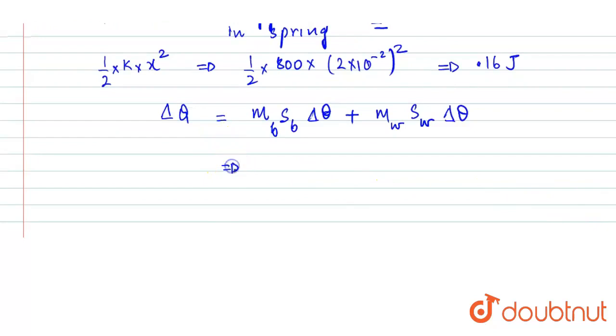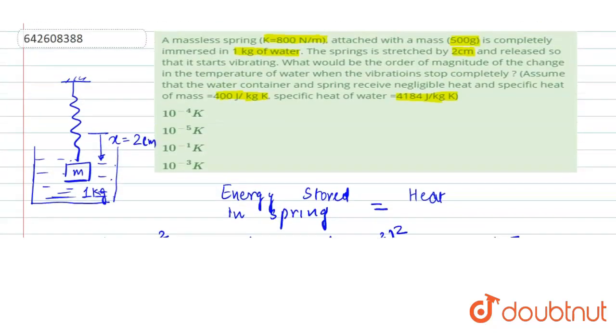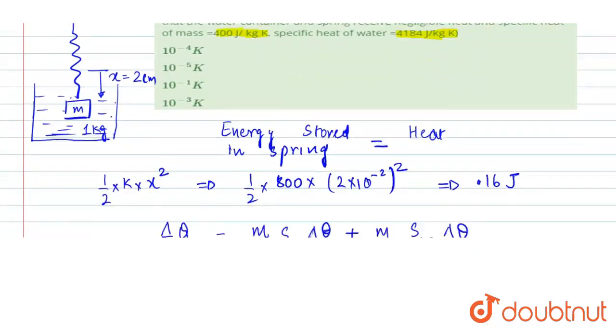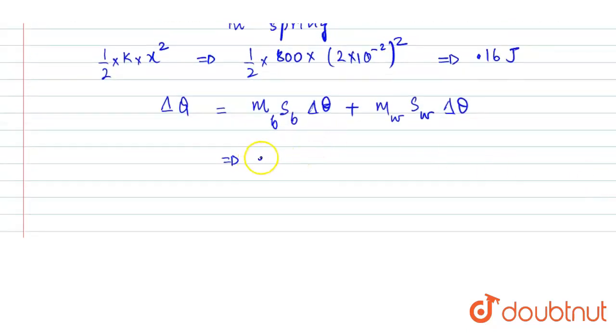Let's put the values. Mass of the block is given to us as 0.5 kg and specific heat is 400 J/kg·K. 0.5 × 400 × Δθ plus mass of the water is 1 kg and specific heat of the water is given to us as 4184 J/kg·K × Δθ, and this equals 0.16.